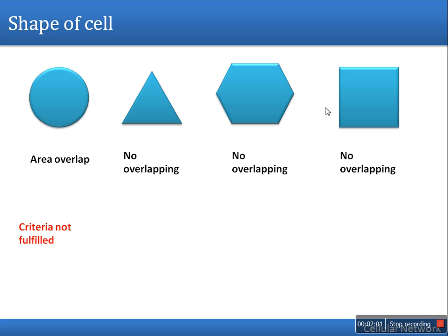The third criteria is area. The circle criteria is not fulfilled, but the area covered by a circle is maximum. We are going to see the area covered by these shapes as compared to circle. If we take triangle as the shape of a cell, this will cover 17.7% area compared to the circle. If we take hexagonal, it will cover 83%.